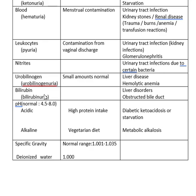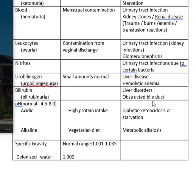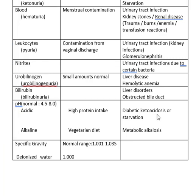Bilirubin is another breakdown product of blood, and again we'd be looking at liver problems or an obstructed bile duct. Last week we studied how the liver makes bile, stores it in the gallbladder, and then it goes to the pancreas to be released. If you block this ability, you're going to end up with bilirubin building up and spilling out into your urine.